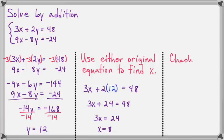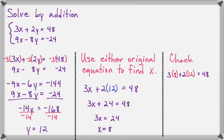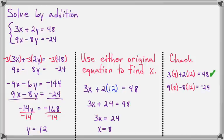So our solution is 8 comma 12. Let's check it. For the top equation: 3 times 8 plus 2 times 12 should equal 48. 3 times 8 is 24, 2 times 12 is 24, and 24 plus 24 is 48 — that checks out. For the second equation: 9 times 8 minus 8 times 12 equals negative 24. 9 times 8 is 72, minus 96 gives negative 24. That one's correct too. So our solution is confirmed: 8 comma 12.